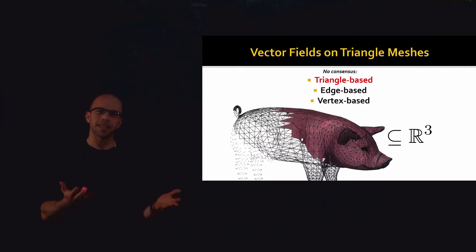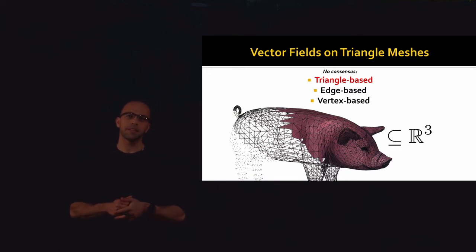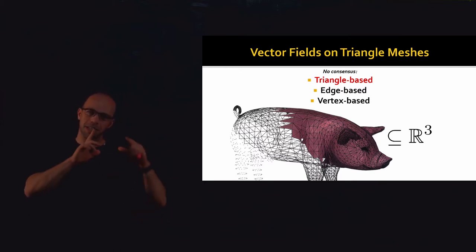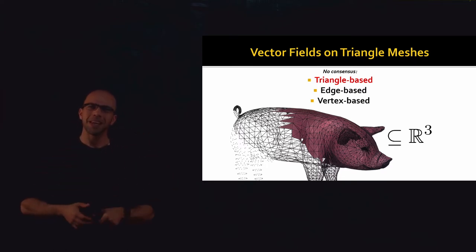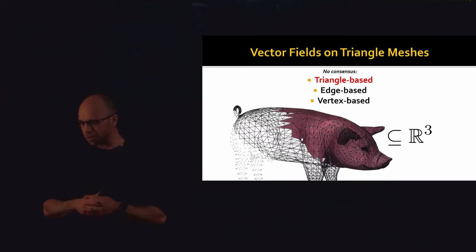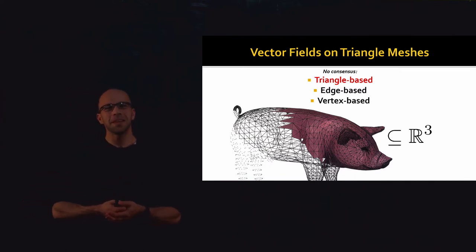To me, triangle-based vector fields are really the easiest one to think about and manipulate, and we've actually already seen them in this course. We represented functions in the finite element world as one value per vertex of a triangle mesh, and we talked about taking gradients of those functions, which gives you one vector per triangle in the plane of that triangle. So that was actually our first example of a triangle-based vector field. But of course, not all vector fields are gradients of functions — that's a deep fact from differential topology — so we need a more general representation.